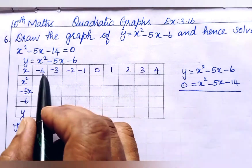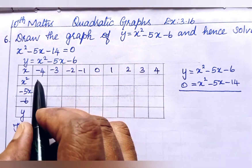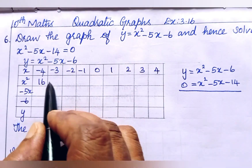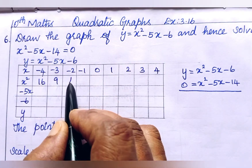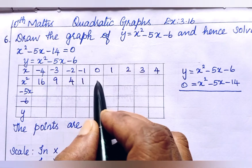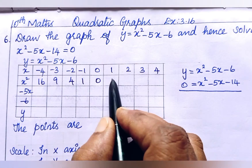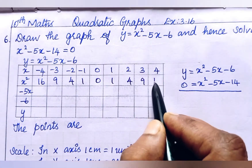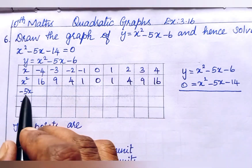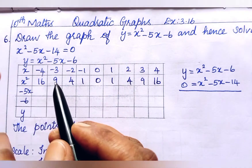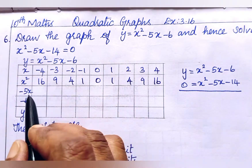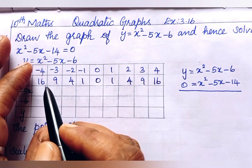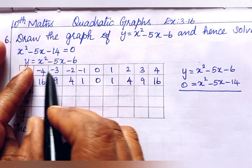Now x squared is the square of each x value: 16, 9, 4, 1, 0, 1, 4, 9, 16. These are the x squared values filled in across the table.